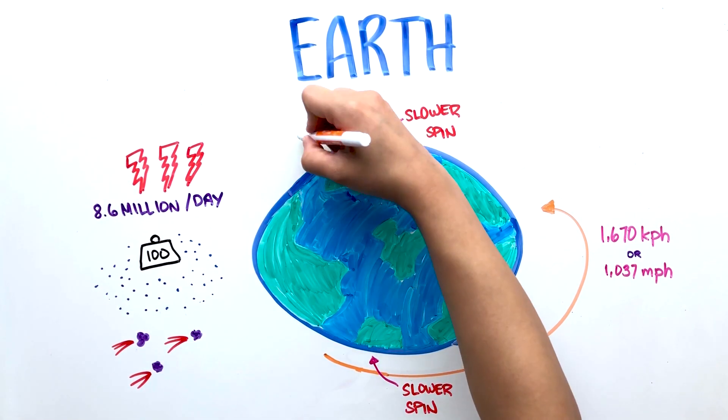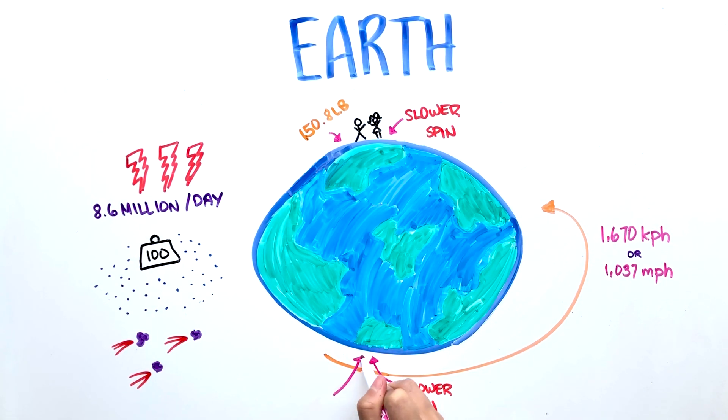If you weigh 150.8 pounds on the north pole, you will only weigh 150 pounds at the equator because the pull of gravity is stronger at the poles.